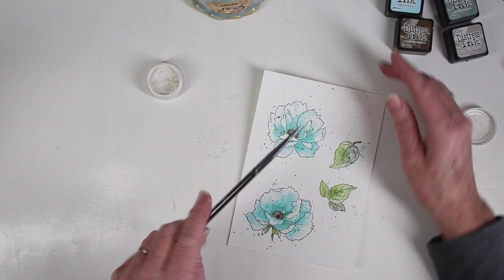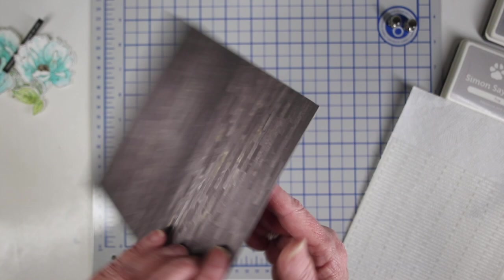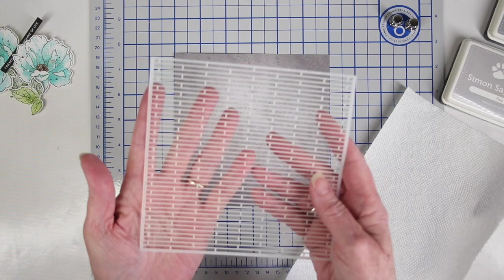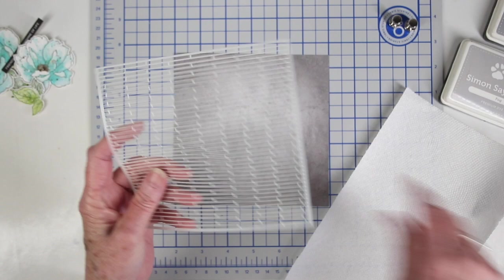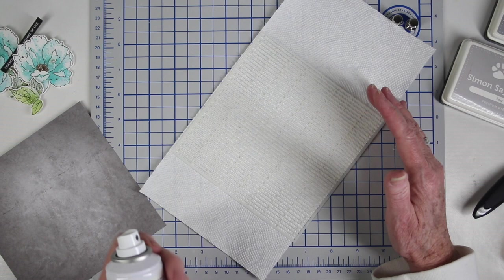For my background, I'll be using a sheet of printed paper. This is just a gray sheet from Honeybee. I'll have the link below, and for this, I'm using the Altenew Narrow Brick Stencil, and this is a really fine stencil. You can kind of pull it apart, so to hold this down, I'll be using some Pixie Spray to keep it in place while I do my stenciling.